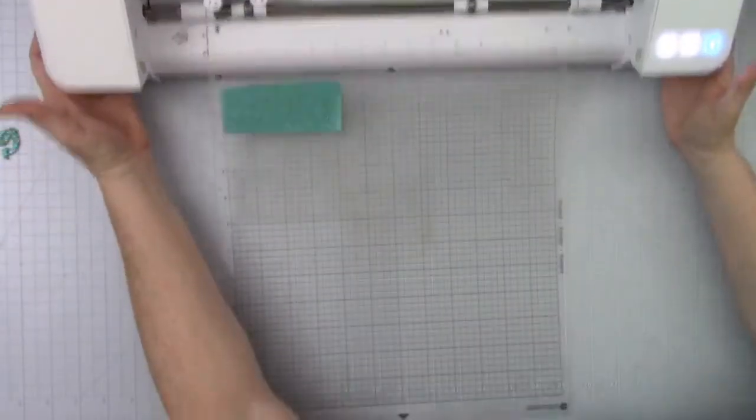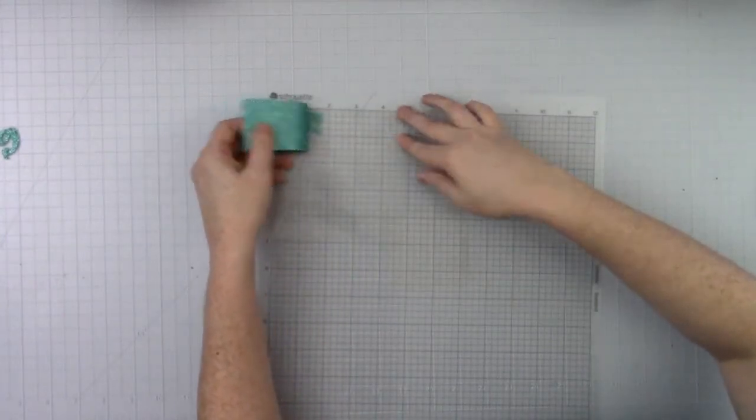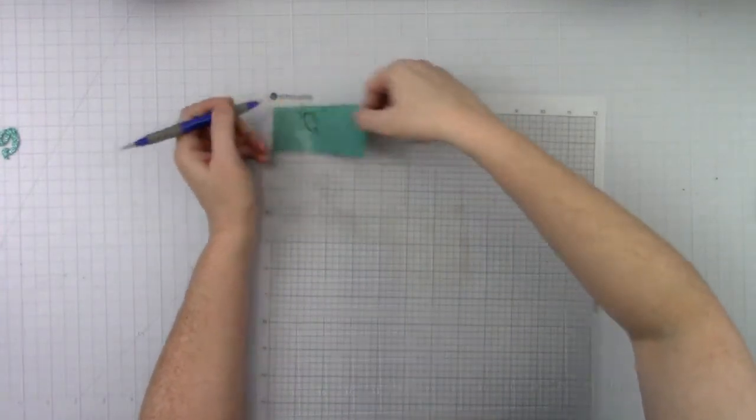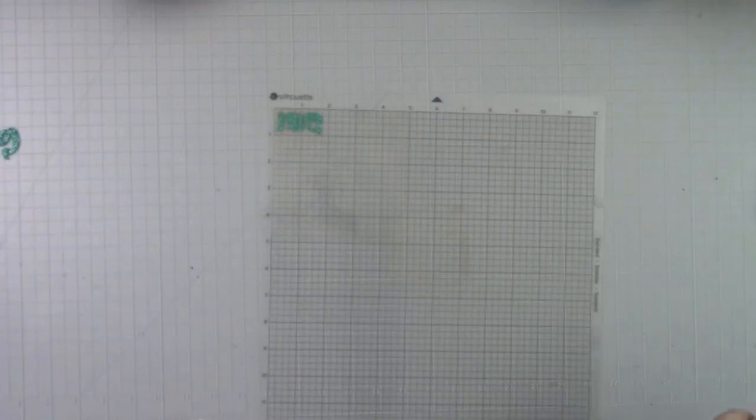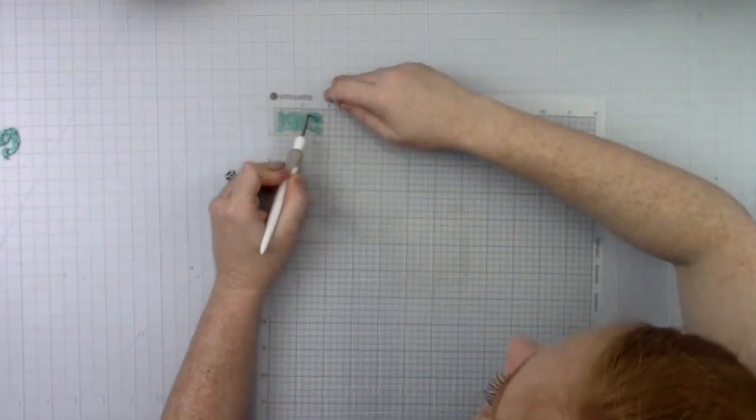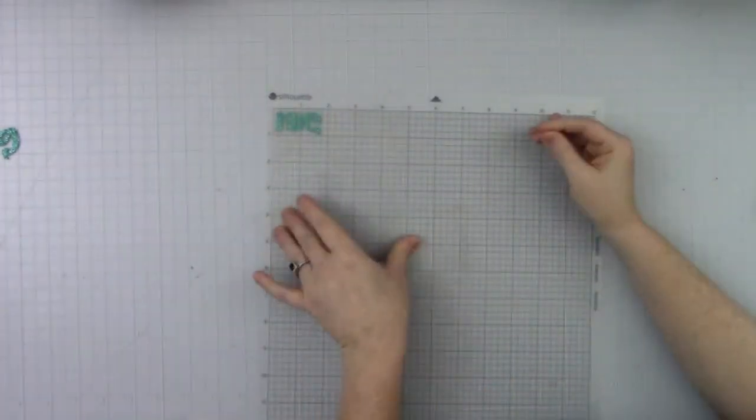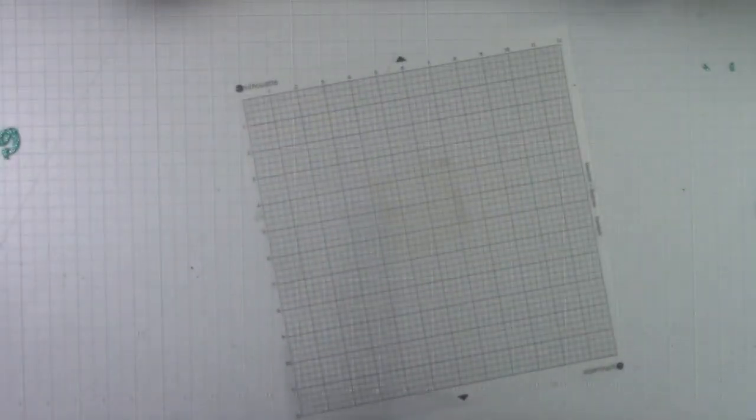Okay, so go ahead and unload that and then this of course should weed nicely. The dot of the I did get a little stuck so it might weed a little bit differently than you're used to because we've already taken it off the carrier sheet and then put it back on. So I just had to pull out that middle or that little dot in the I but remember this is mirrored so we will go ahead and keep it on the carrier sheet and then transfer it over to our project.